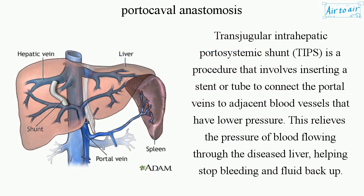Transjugular Intrahepatic Portosystemic Shunt is a procedure that involves inserting a stent or tube to connect the portal veins to adjacent blood vessels that have lower pressure. This relieves the pressure of blood flowing through the diseased liver, helping stop bleeding and fluid backup.